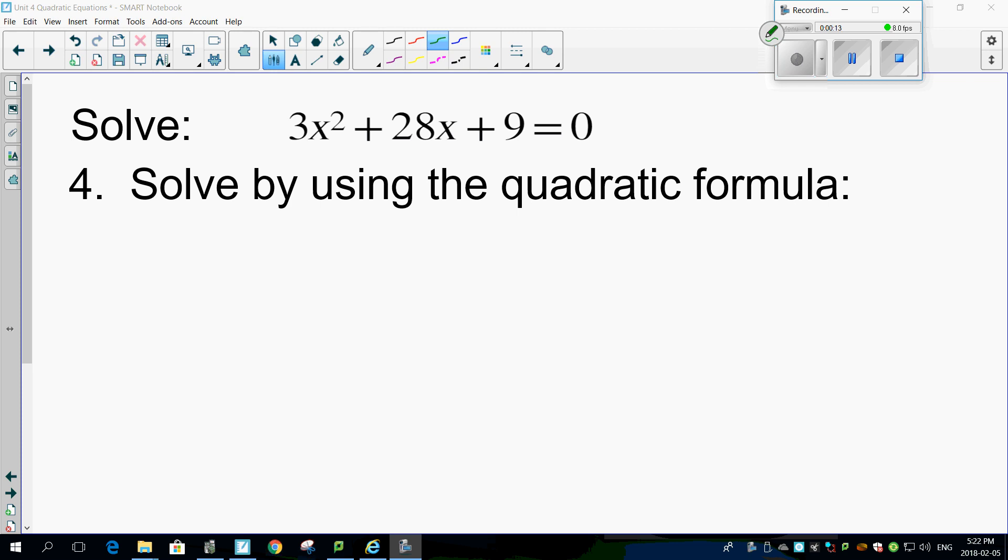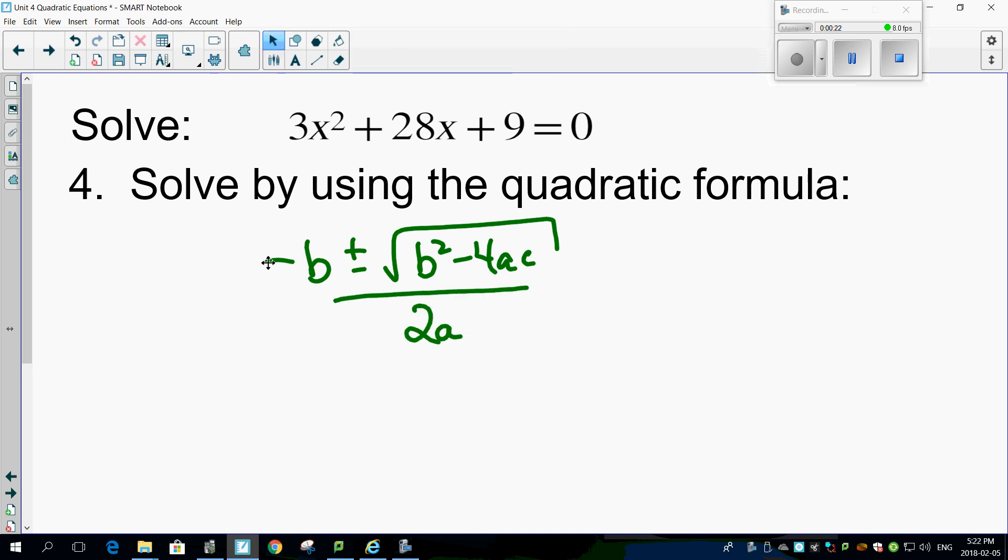Okay, so remember the quadratic formula: minus b plus or minus square root b squared minus 4ac over 2a. Here we go. Let's start substituting things in.